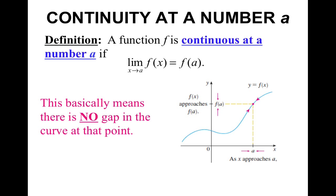This basically means there is no gap in the curve at that point. As we can see in this picture, we have a smooth curve, and if we were to take the limit as x approaches a from the left and from the right, we would see that the value of the limit is approaching the same value of the function, the y value.